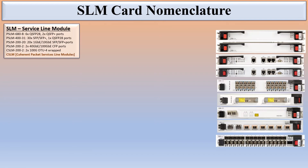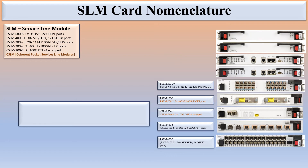Regarding SLM card nomenclature, these are the different service line modules: PSLM 220, PSLM 202, CSLM 202, PSLM 680-8, and PSLM 400-31. Each service line module name describes the ports inside. For example, PSLM 680-8 has 6 QSFP28 ports and 2 QSFP+ ports.